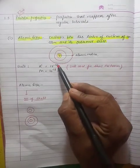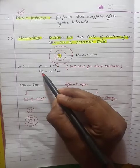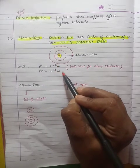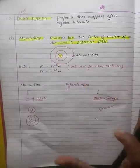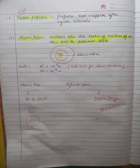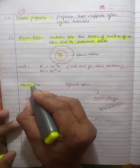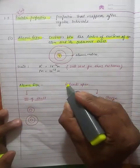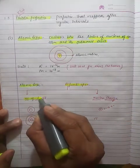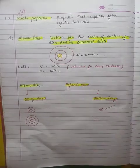Angstrom is 10 to the power of minus 10 meters, and picometer is 10 to the power of minus 12 meters. Atomic size depends upon two factors: number one, the number of shells, and number two, the nuclear charge.